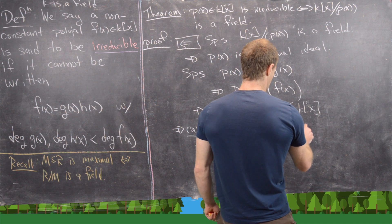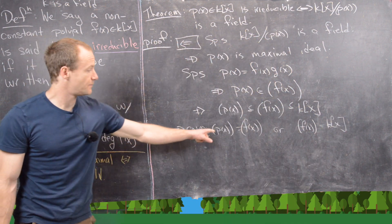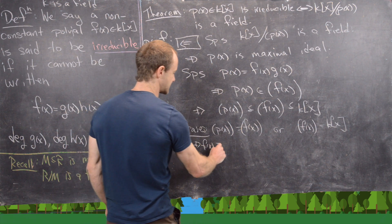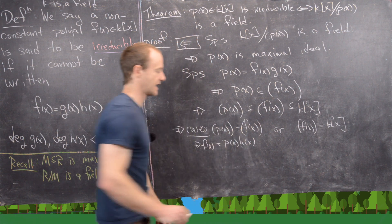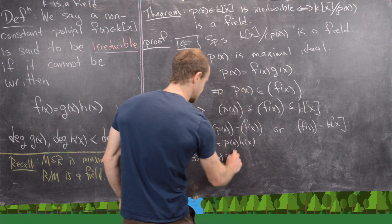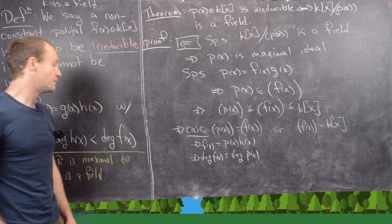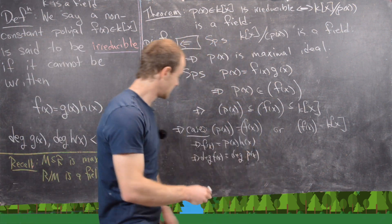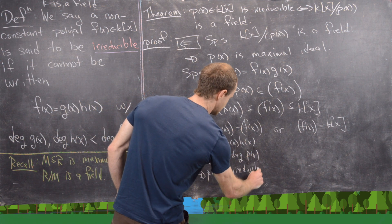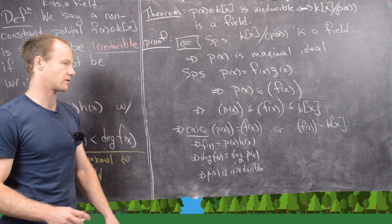In the first case, not only is p(x) a multiple of f(x), but f(x) is also a multiple of p(x). That tells us the degree of f(x) equals the degree of p(x). But that means our factorization kind of failed — in other words, p(x) is irreducible, because the only way to factor it was where one of the polynomials had degree equal to the original polynomial.